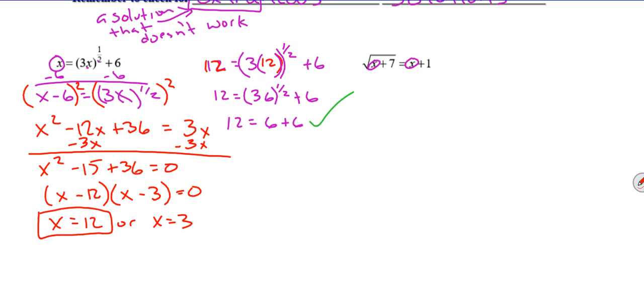So plug a 3 in. 3 equals the quantity 3 times 3, and then that's raised to the 1/2, plus 6. When we simplify this, we get 3 equals 9 to the 1/2 plus 6. Well, the square root of 9 is 3, so 3 equals 3 plus 6. Well, that's not true. So this does not work. Our only solution is x equals 12. So to get this question right, you need to show us both possible answers, and then you need to show us which one is correct and which one is incorrect, or which one is extraneous.